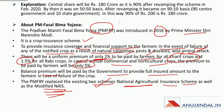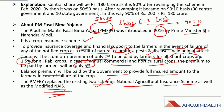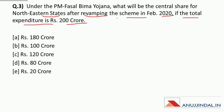In February 2020, the scheme was revamped and the share between the central government and state governments for northeastern states was changed to a 90:10 ratio. Earlier, the ratio was 50:50 for all states including northeastern states. For all other states, the share remains 50:50. Now for northeastern states specifically, the central government contributes 90 percent and the state government contributes 10 percent.